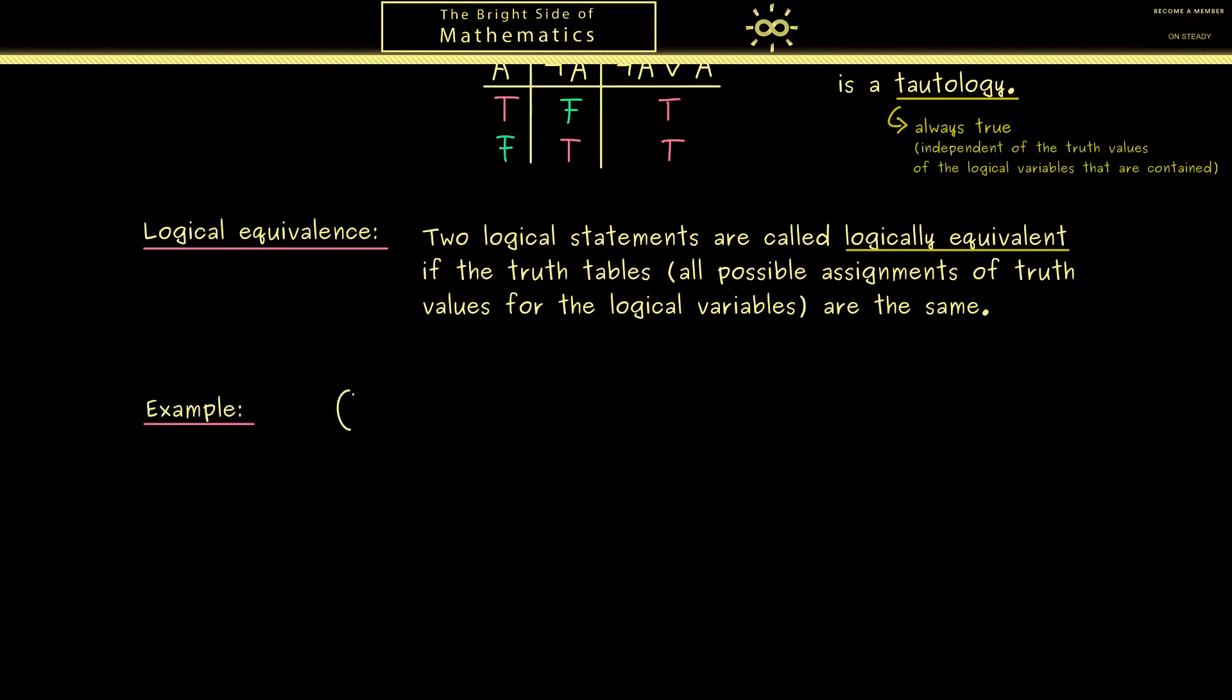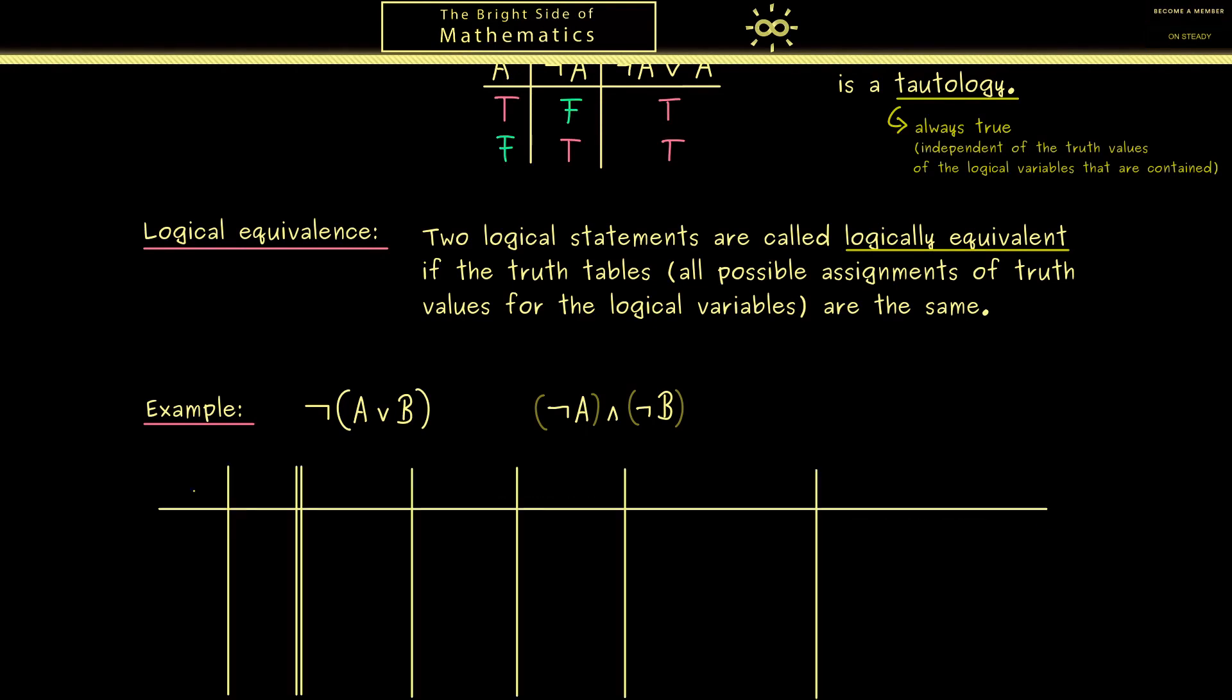It looks like a reasonable term, but to understand it I think we should look at an example. Here I want to consider A or B with a NOT in front, and also not A and not B. Please keep in mind we need parentheses here but not here. Of course, if you want, you are allowed to use them here. Let's do a large truth table. We need here our inputs A and B and the outputs on the right-hand side. In the next step, we can fill in all possible combinations of the truth values of the logical variables.